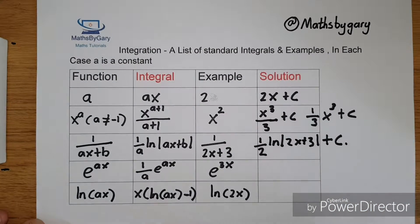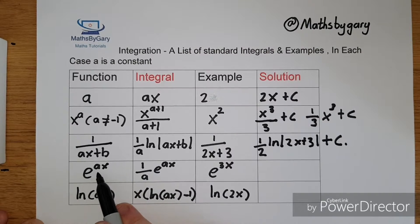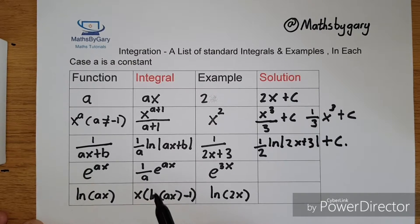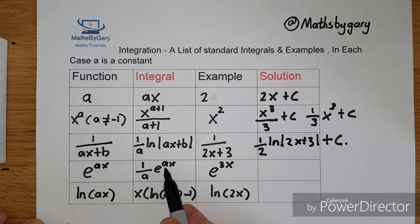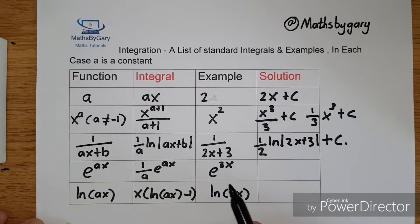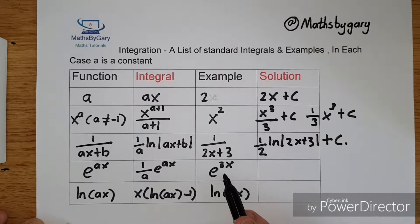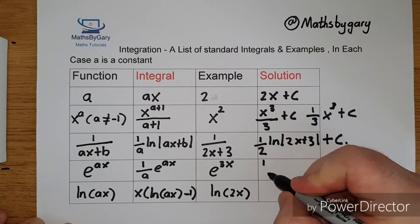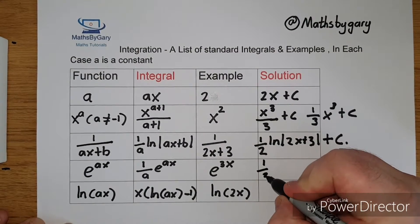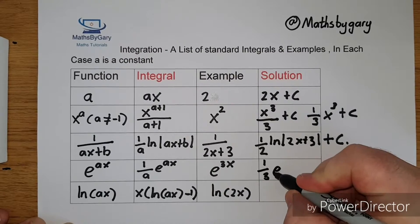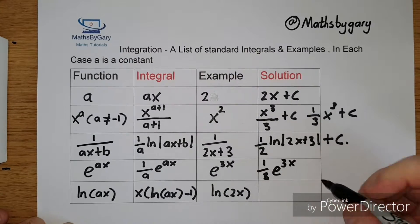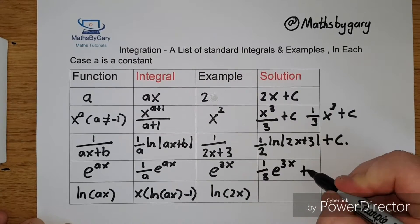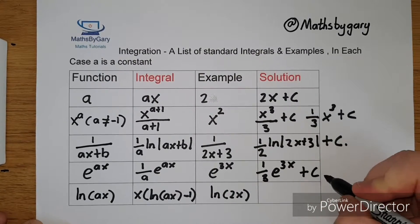Moving on to the next one: e to the ax becomes 1 over a times e to the ax. So e to the 3x will simply become 1 over 3 times e to the 3x, and then again plus the constant of integration.